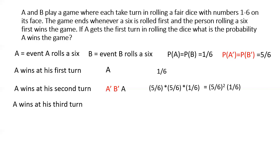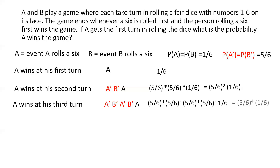Next, consider what happens if A wins at his third turn. In that case, the sequence of events has to be A complement, B complement, A complement, B complement, then A. Evaluating the probability, that comes to (5/6)⁴ × 1/6.